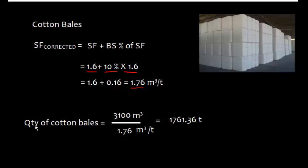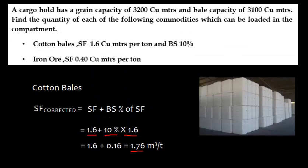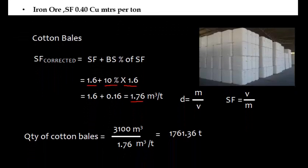The quantity of cotton bales is found using the formula: volume divided by storage factor. This comes from the fact that density equals mass over volume, so storage factor equals volume over mass, meaning mass equals volume divided by storage factor. Here, cubic meters cancel and the result is in tons — this is the quantity of cotton bales.